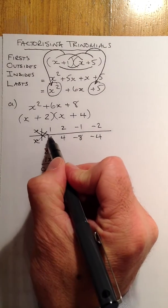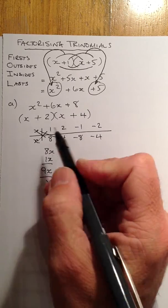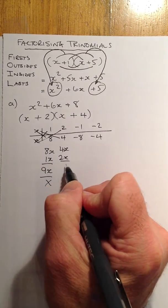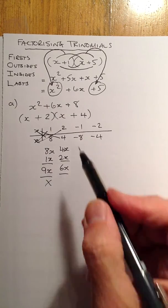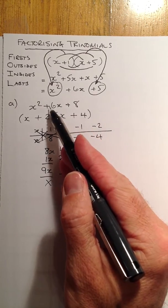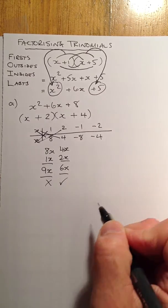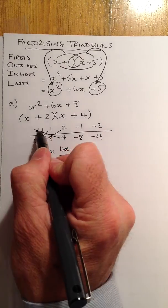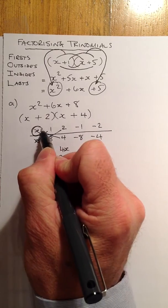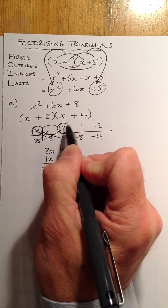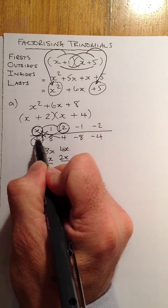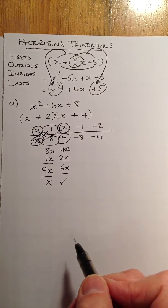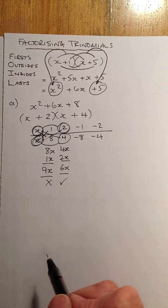Let's try the other factors. 4 times x gives me 4x, x times 2 gives me 2x. Gather them together, that gives me 6x. Compare that with the middle term — 6x and 6x, yes, that's correct. So those are going to be my factors. The x from the top pairs with the 2 to give my first bracket, and the x pairs with the 4 to give my second bracket. That's the way I would factorise using the table method.